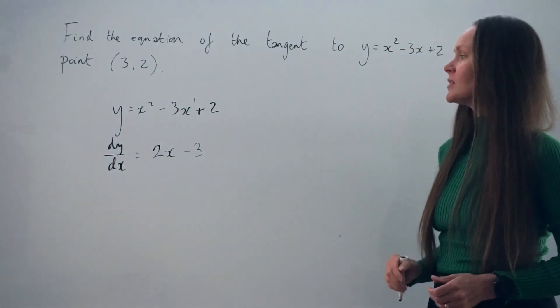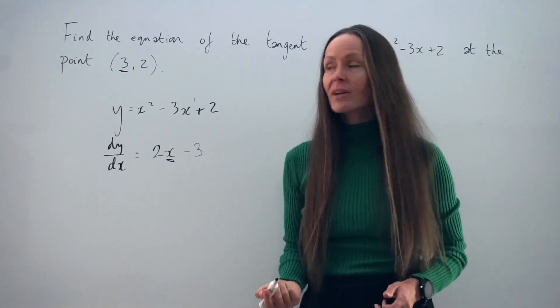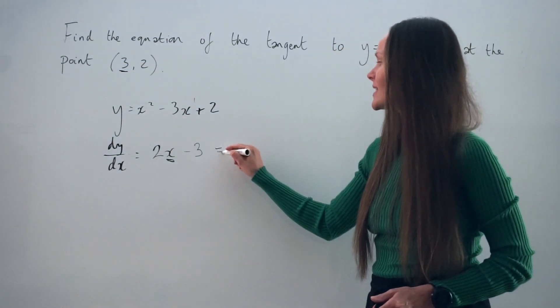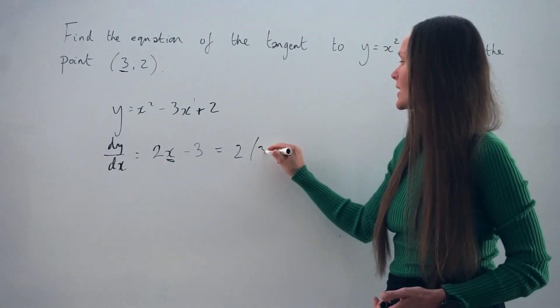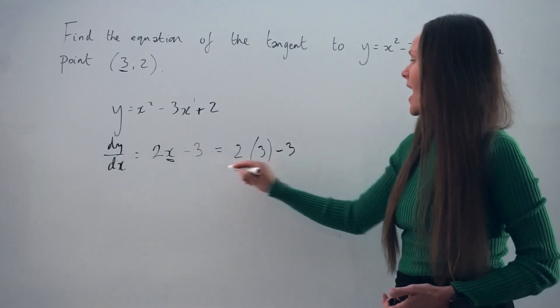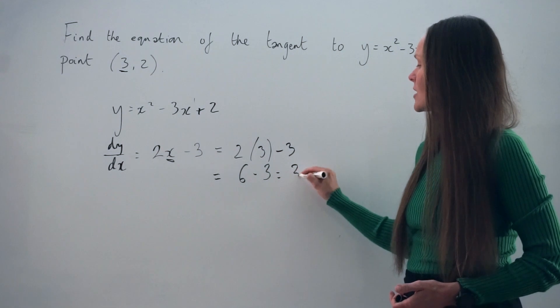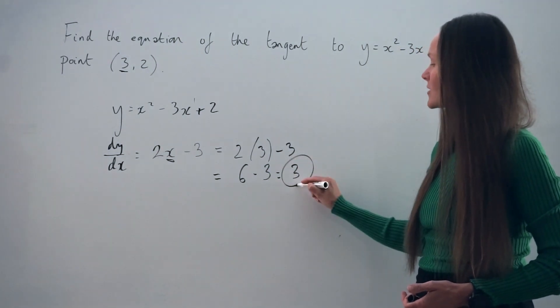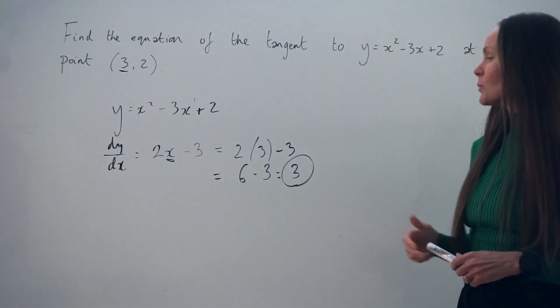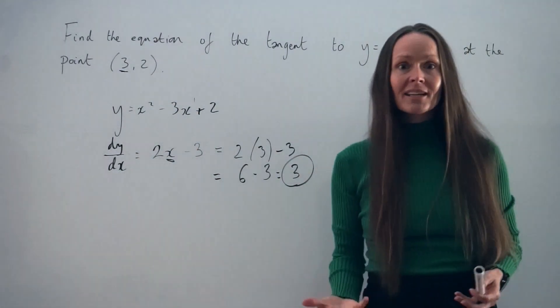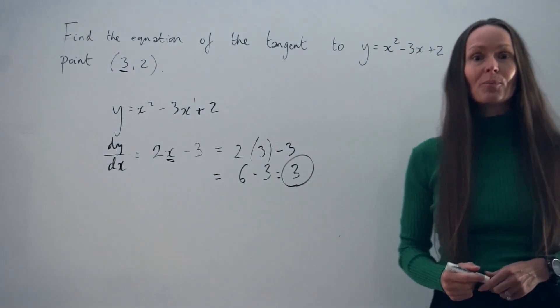Except we do have a point. We know this x value at the point of intersection is positive 3. So what we can do next is replace this x value with positive 3. So that we have 2 lots of 3 minus 3. And 2 multiplied by 3 is 6. And 6 take away 3 is 3. So this is the gradient of the curve at the point 3, 2. So the gradient is positive 3. Which means the gradient of the tangent, the straight line intersecting the curve at that point, is also positive 3.